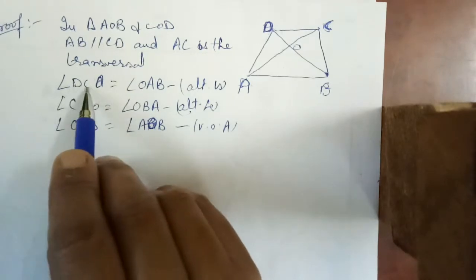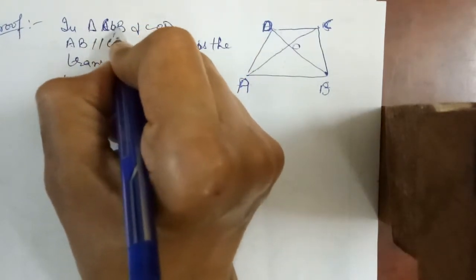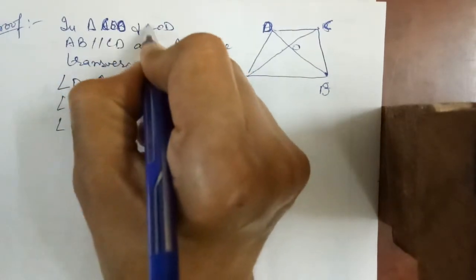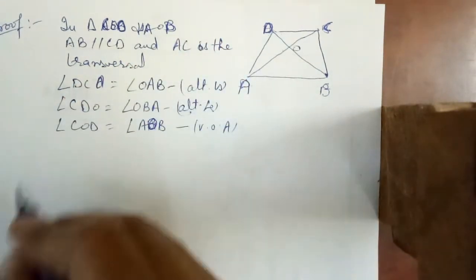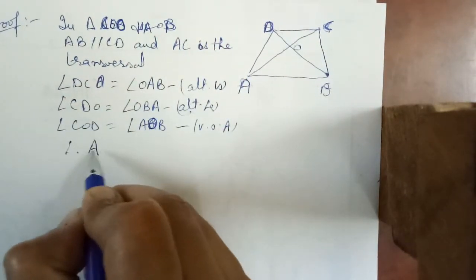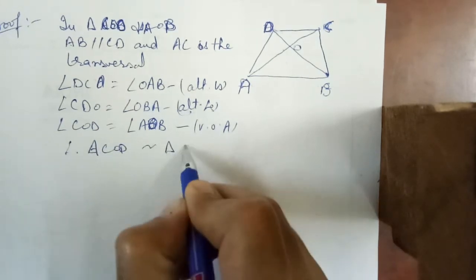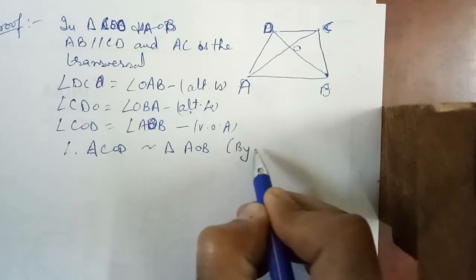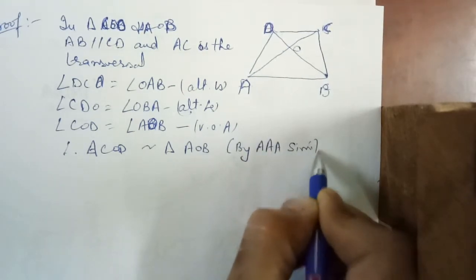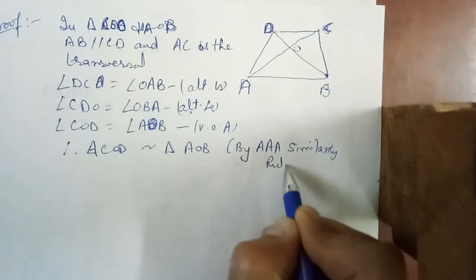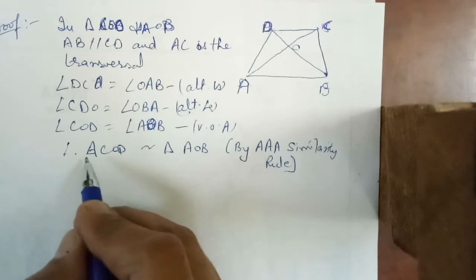Note that we have used triangle CDO and triangle AOB here. Therefore, triangle COD is similar to triangle AOB by the Angle-Angle-Angle similarity rule.